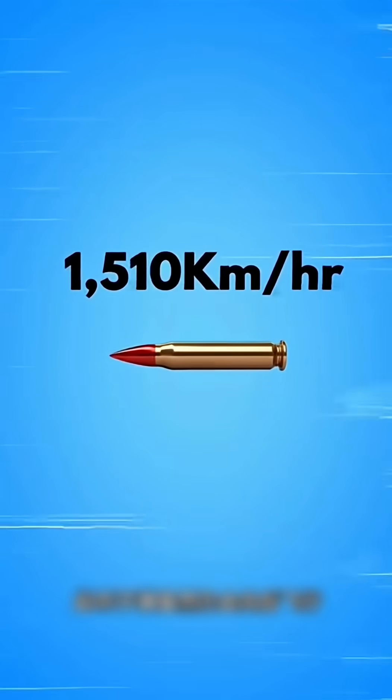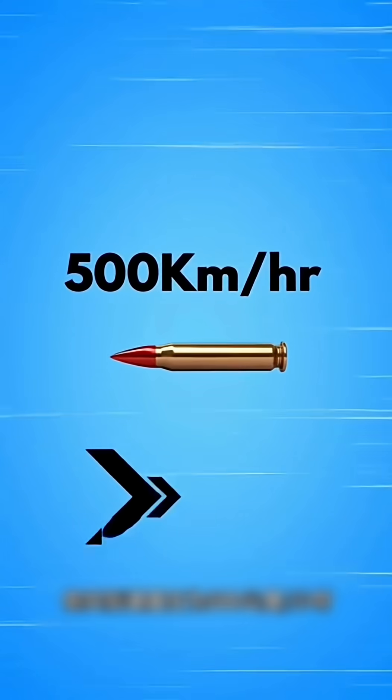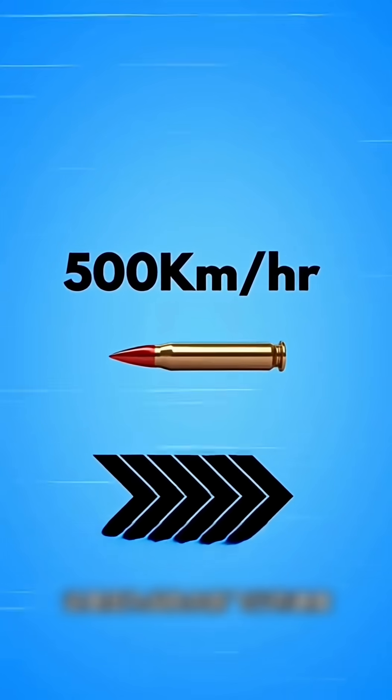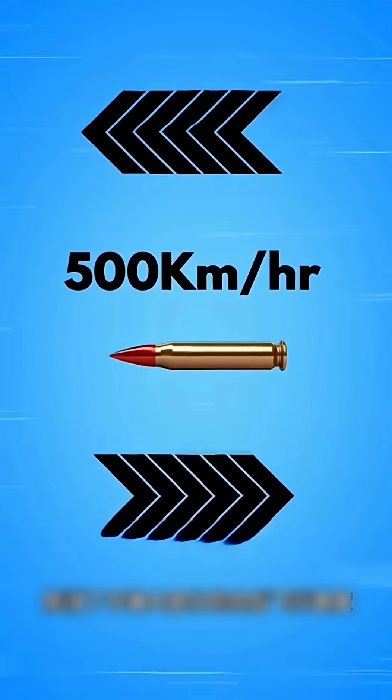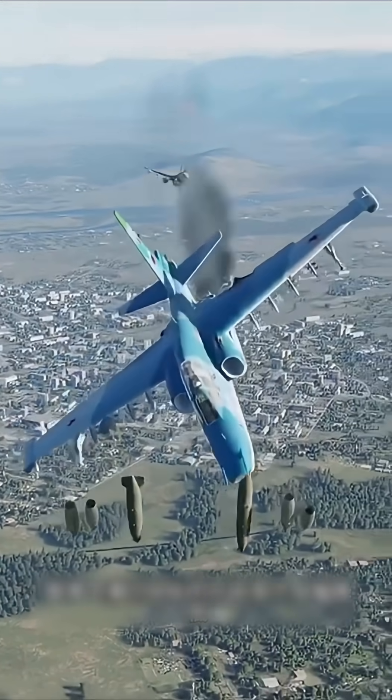At this time, the bullet will still fly backwards. But the actual speed is only 500 kilometers per hour. This is because the forward speed of the fighter cancels out most of the bullet's backward velocity, making the bullet's effectiveness on the target drop significantly.